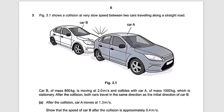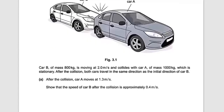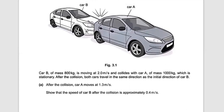Figure 3.1 shows a collision at very slow speed between two cars traveling along a straight road. Car B has a mass of 800 kilograms and is moving at 2 meters per second. It collides with Car A, which has a mass of 1000 kilograms and is stationary — meaning at rest. After the collision, both cars travel in the same direction as the initial direction of Car B.